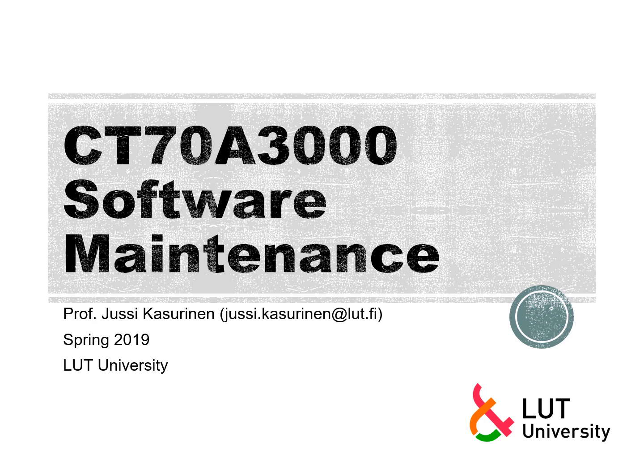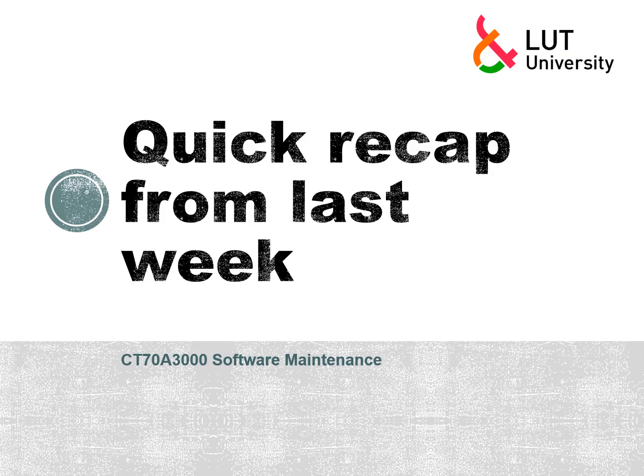Last week we were talking about two aspects: software product lines and software configuration management. These are very much about software maintenance, and important when we already have a codebase or resource base or assets we want to manage. Configuration management is about having different versions forming packages we can maintain, whereas product lines are about developing new products based on things we already have and maintaining a core library of functionalities.